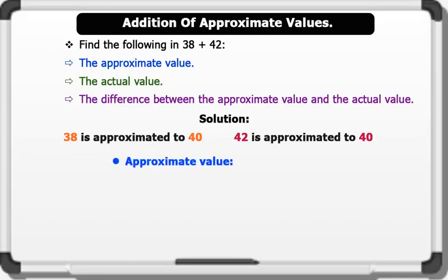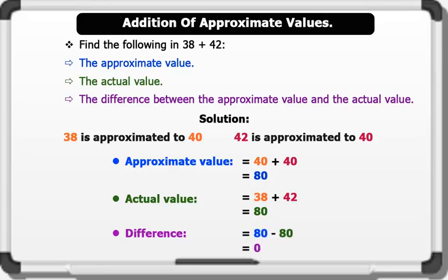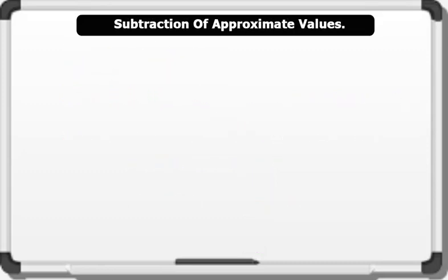Solution: Following the rules of approximation, 38 is approximated to 40 and 42 is approximated to 40. To find the approximate value, we add 40 plus 40, which gives us 80. To find the actual value, we simply add 38 plus 42, which gives us 80. The difference between the actual value and the approximate value is 80 minus 80 equals 0. That's very good.